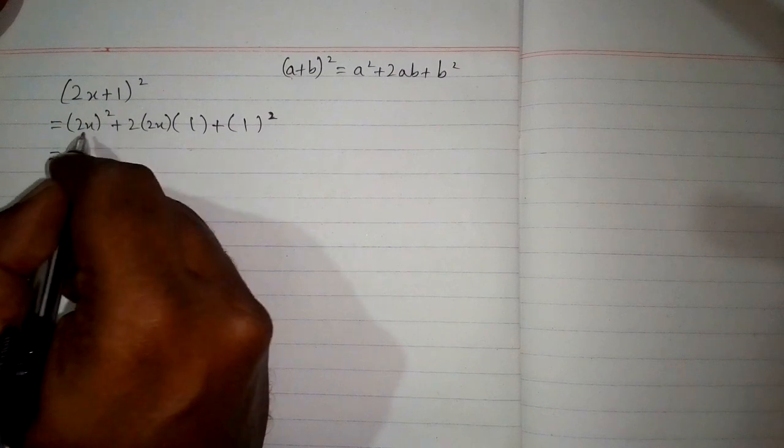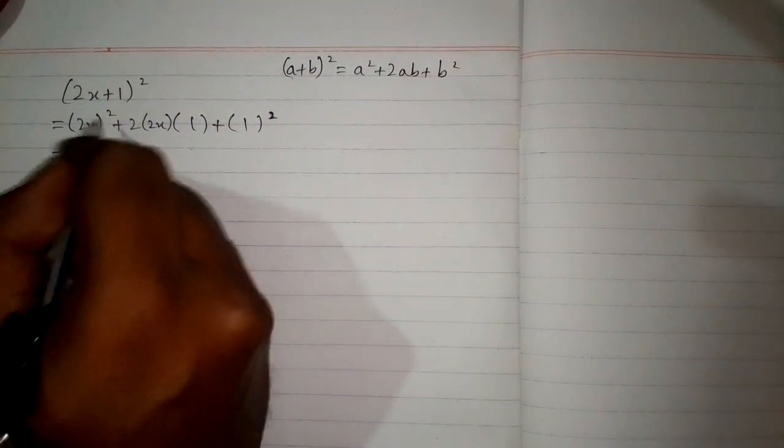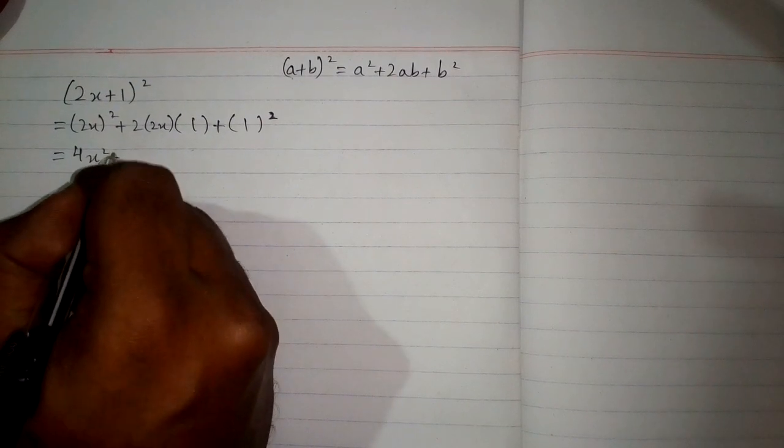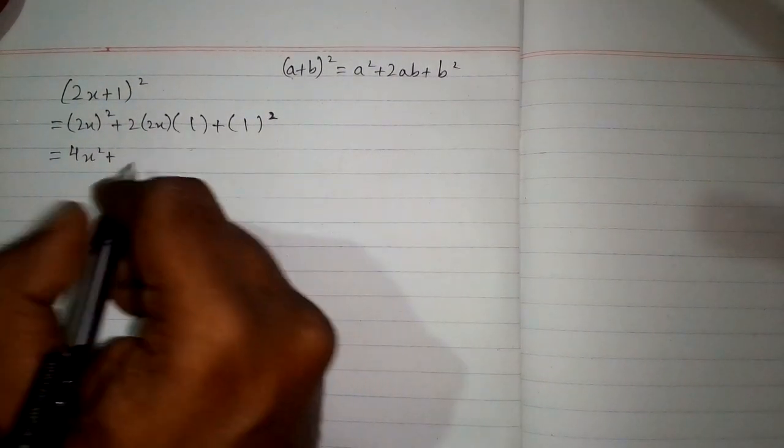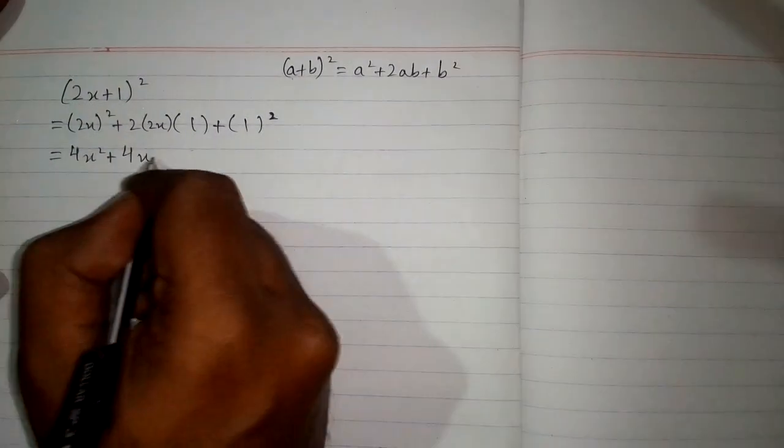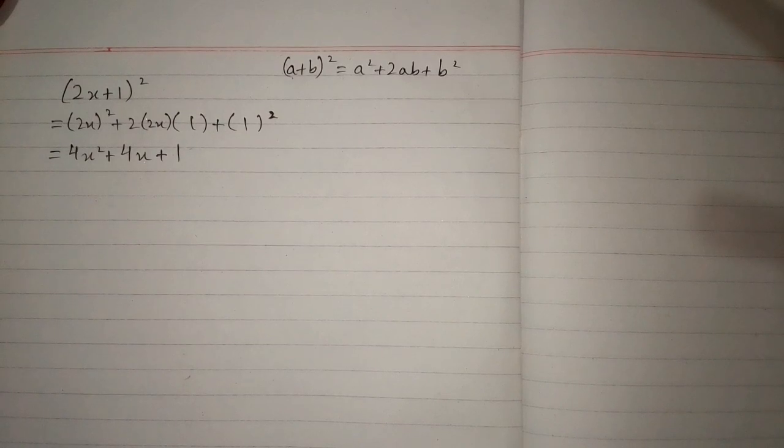Now (2x)². Square of 2 is 4 and square of x is x². Then 2 times 2x is 4x, and 4x times 1 is 4x. Square of 1 is 1. So (2x+1)² = 4x² + 4x + 1.